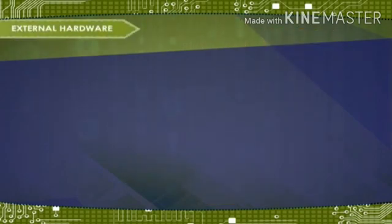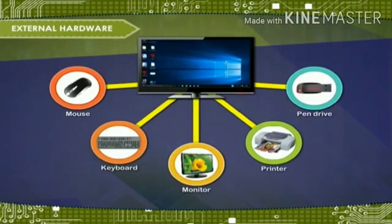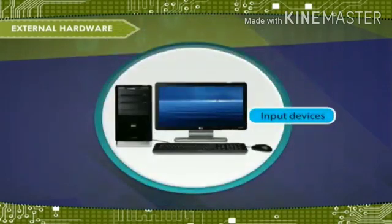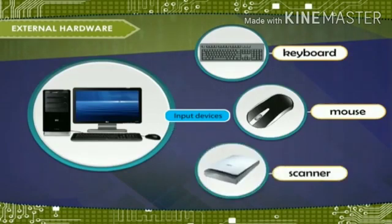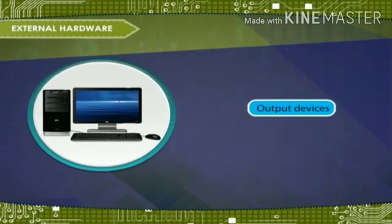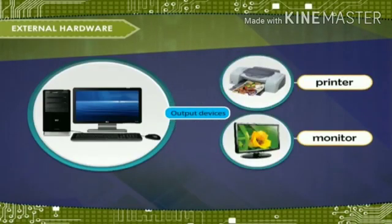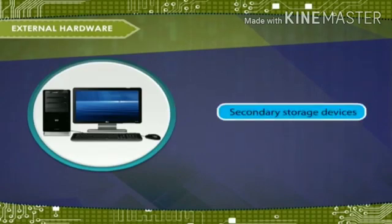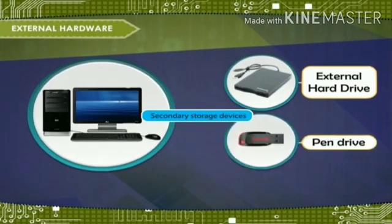External hardware describes a hardware device that is installed outside of the computer. Input devices include keyboard, mouse, and scanner. Output devices include printer and monitor. Secondary storage devices include external hard drive and pen drive.